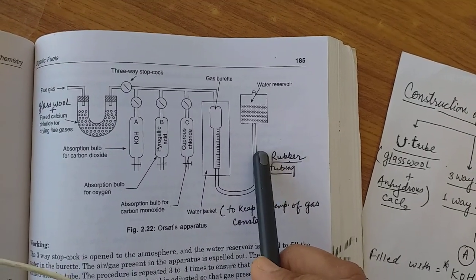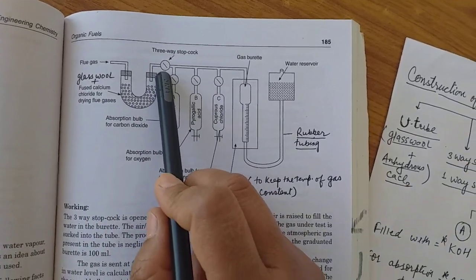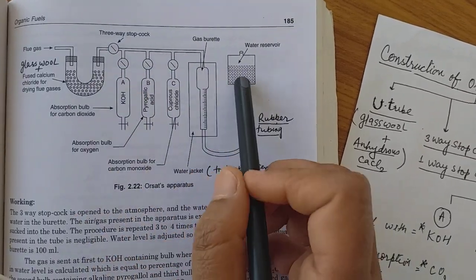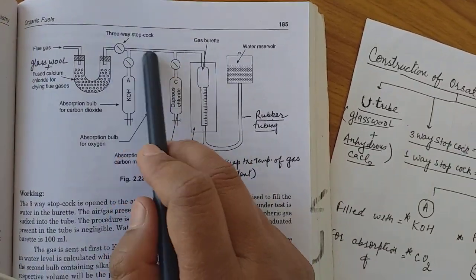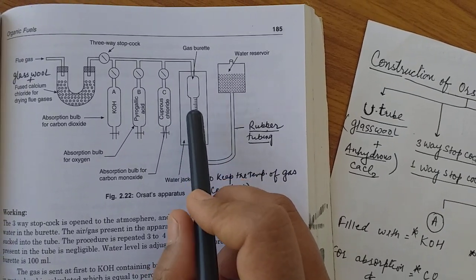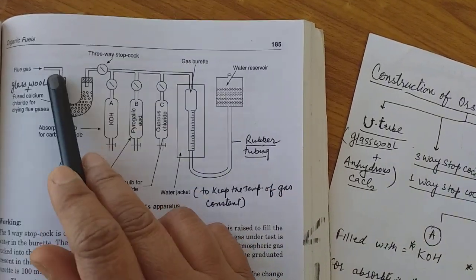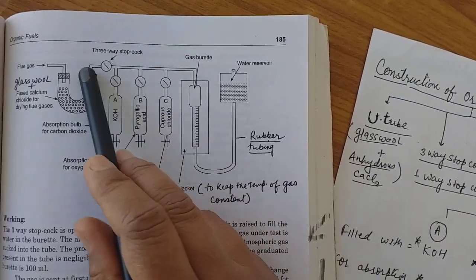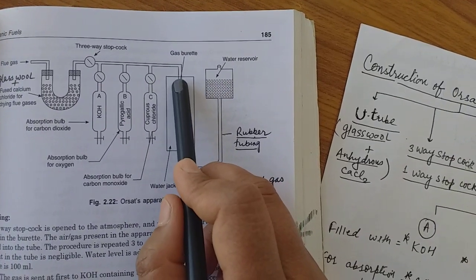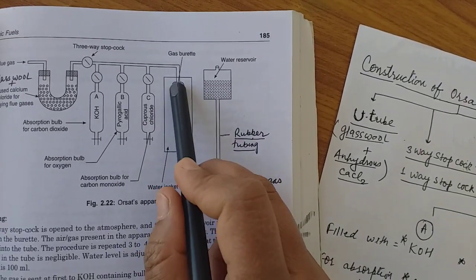Now we are doing working. How it works? First, this three-way stopcock is open for the atmosphere and the air which is filled in this apparatus is removed. First, this procedure is repeated two or three times. At the same time, the flue gases are also sucked inside this tube and pressure is exerted by the help of this leveling bottle. We can fill here the 100 ml of water.